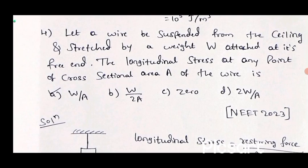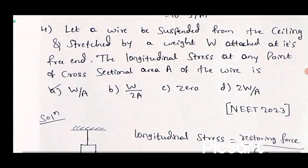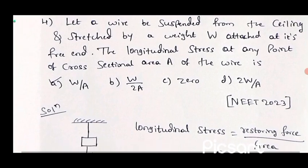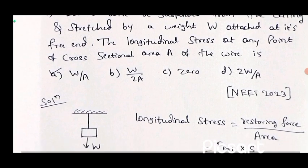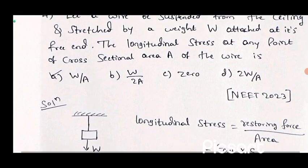Fourth question: let a wire be suspended from the ceiling and stretched by a weight W attached at its free end. The longitudinal stress at any point of cross-sectional area A of the wire is — options: W by A, W by 2A, 0, or 2W by A. This question is asked in NEET 2023. Here they asked the longitudinal stress.